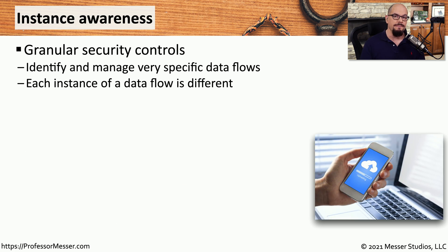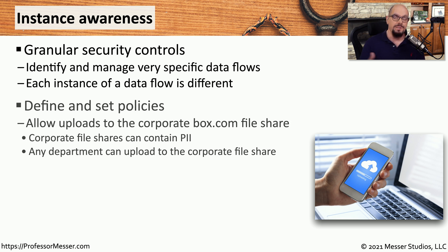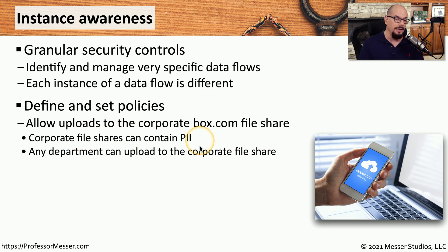Sometimes it's useful to have very granular security controls and be able to manage exactly what type of traffic may be flowing across your cloud configuration. This means you can identify what's in the data of the application flows and make security decisions based on that. For example, your organization might use Box.com for sharing files in the cloud, with policies that allow personal information to be stored in the corporate file share by any department.